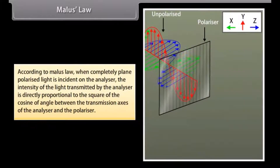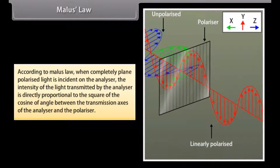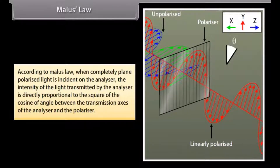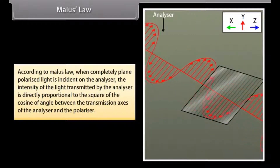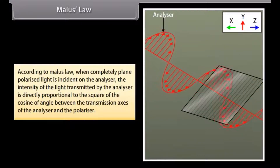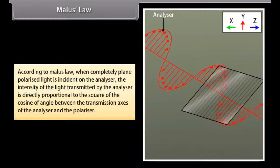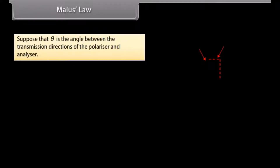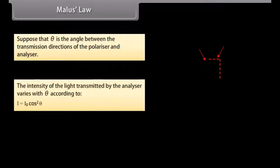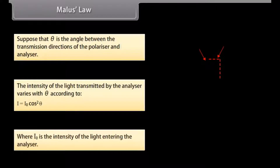According to Malus's law, when completely plane polarized light is incident on the analyzer, the intensity of the transmitted light is directly proportional to the square of the cosine of the angle between the transmission axes of the analyzer and the polarizer. If θ is the angle between the transmission directions of the polarizer and analyzer, then I = I₀ cos²θ, where I₀ is the intensity of light entering the analyzer.